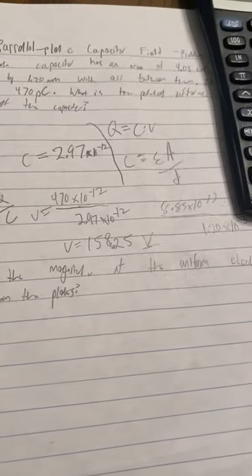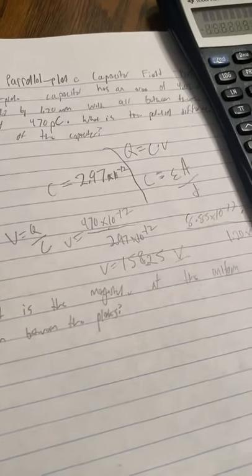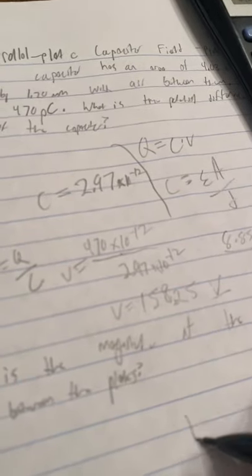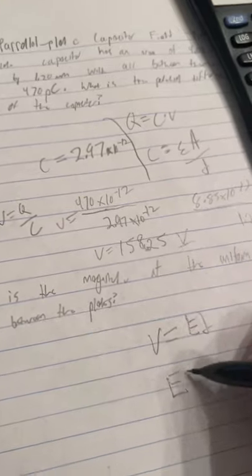Okay, so now the next part is going to ask what is the magnitude of the uniform electric field in the region between the plates. And so since we had a voltage, we're going to have to use this formula right here.